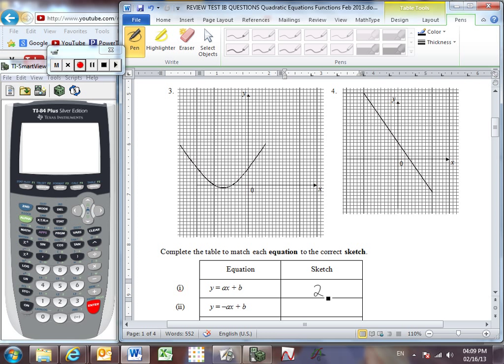The next one, we again have a linear equation, but this time we've got the negative of a positive slope a, which must mean, of course, it's a negative slope. We can see that that is the line in graph four.